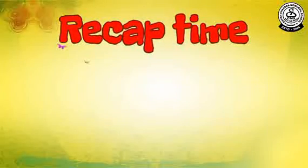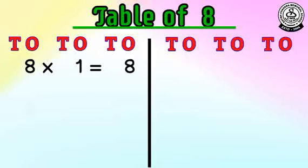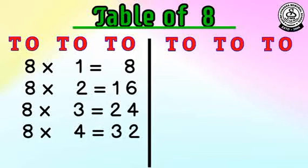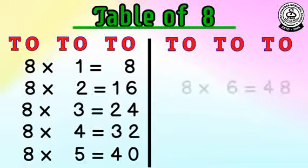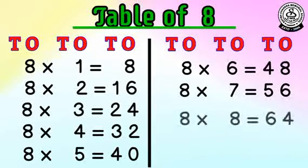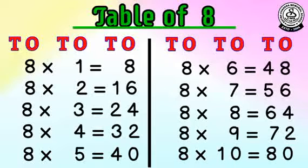Now recap time. 8 1's are 8, 8 2's are 16, 8 3's are 24, 8 4's are 32, 8 5's are 40, 8 6's are 48, 8 7's are 56, 8 8's are 64, 8 9's are 72, 8 10's are 80.